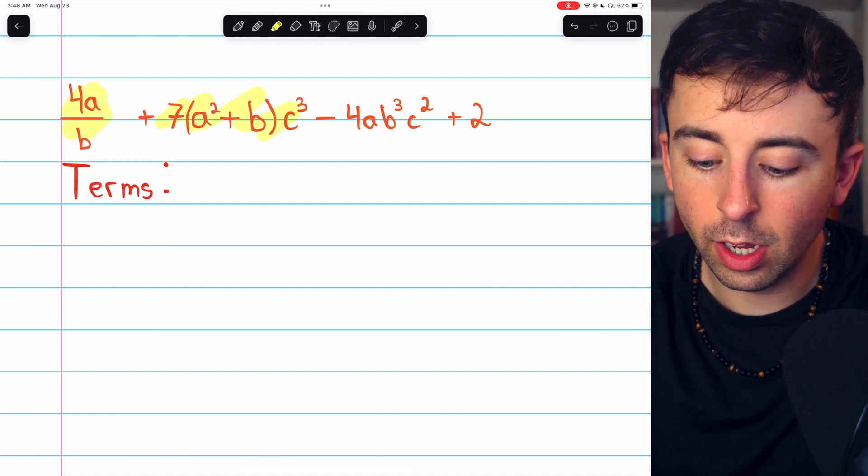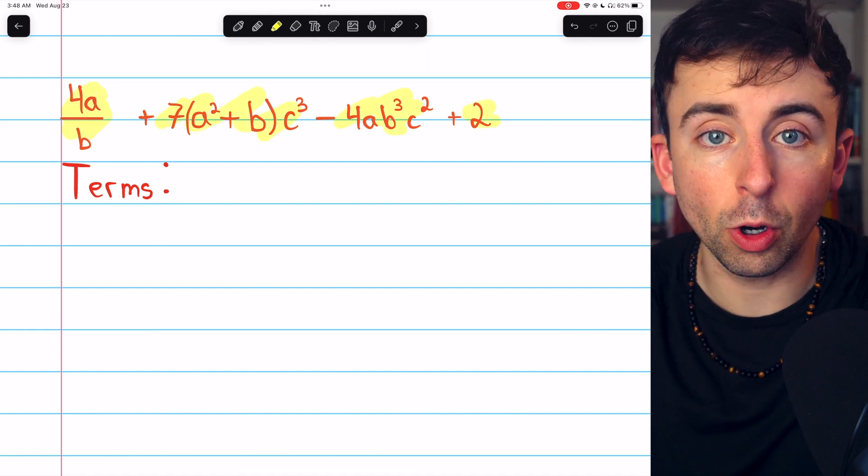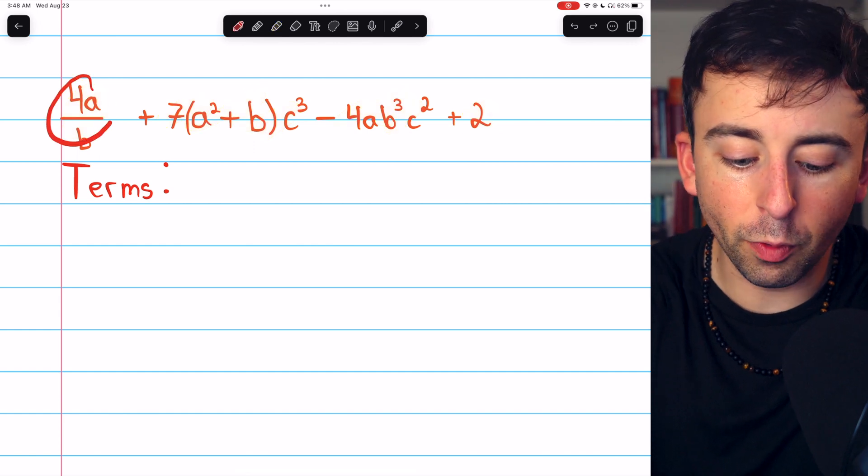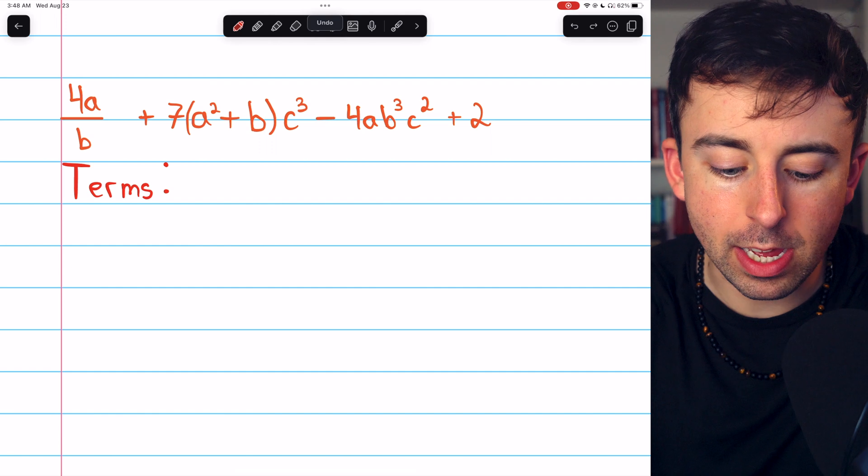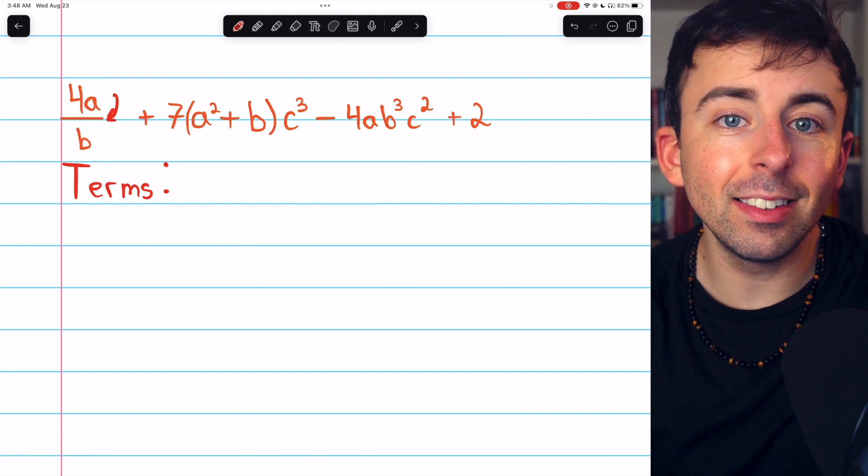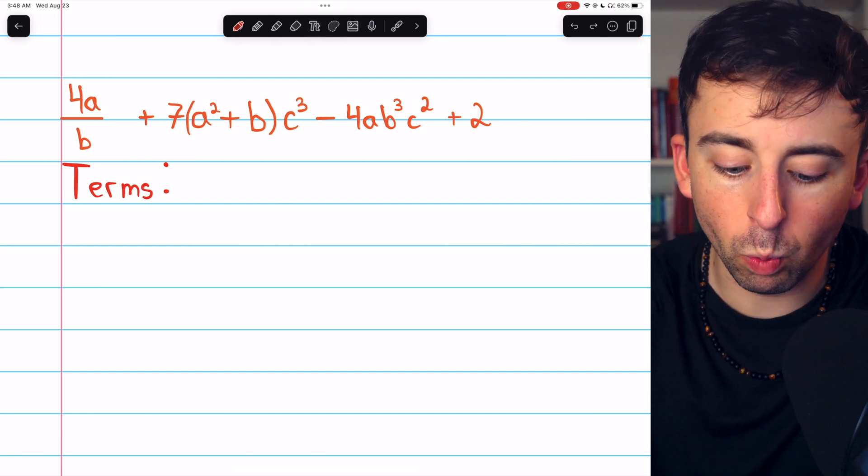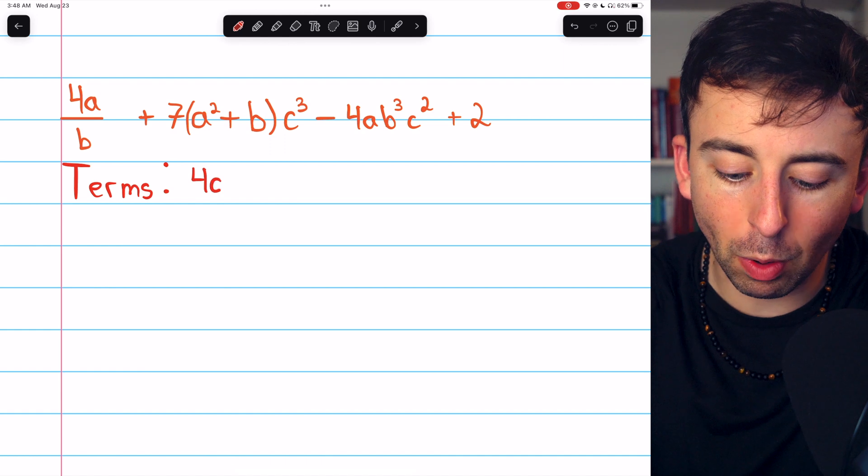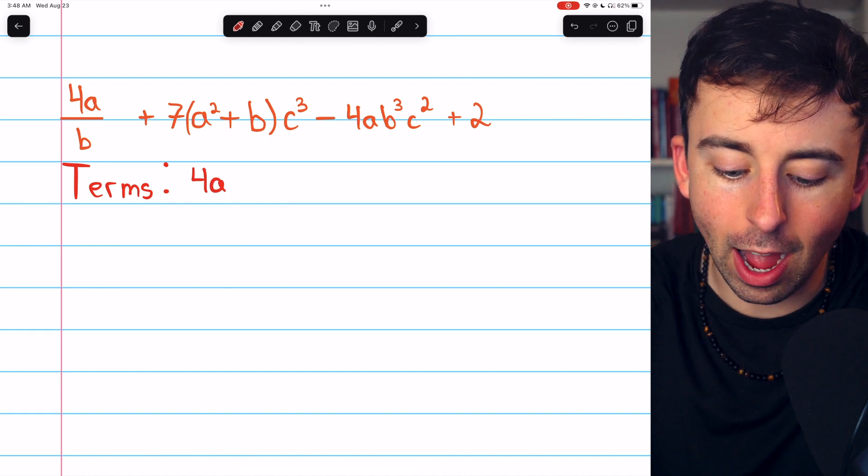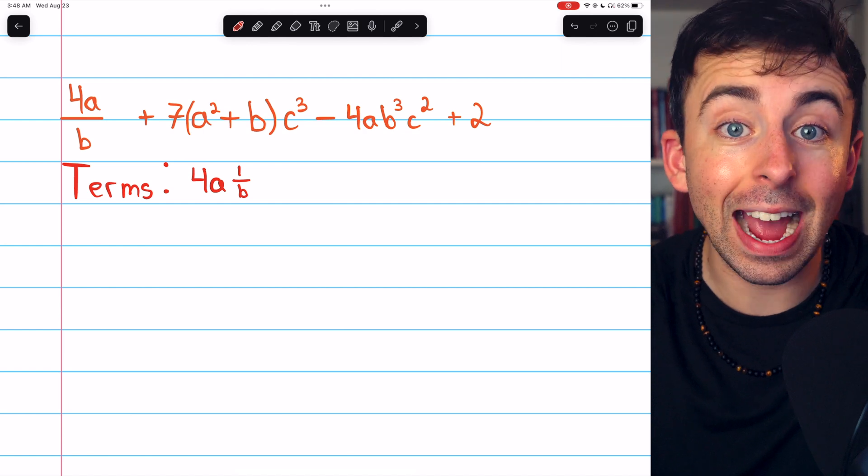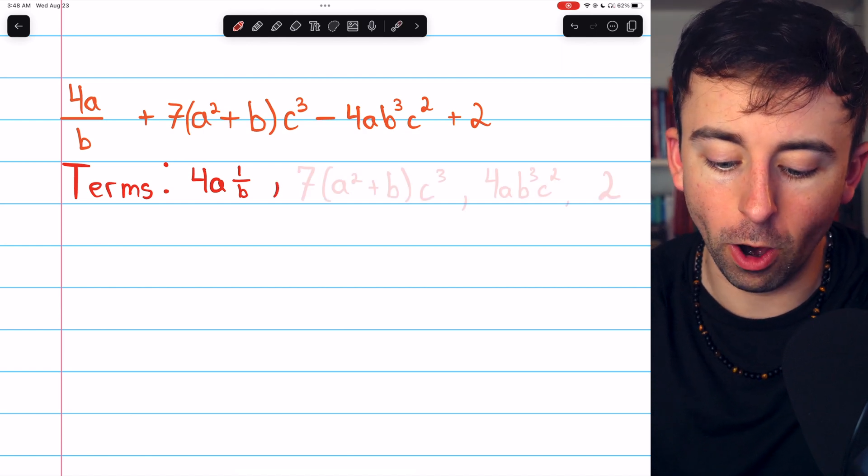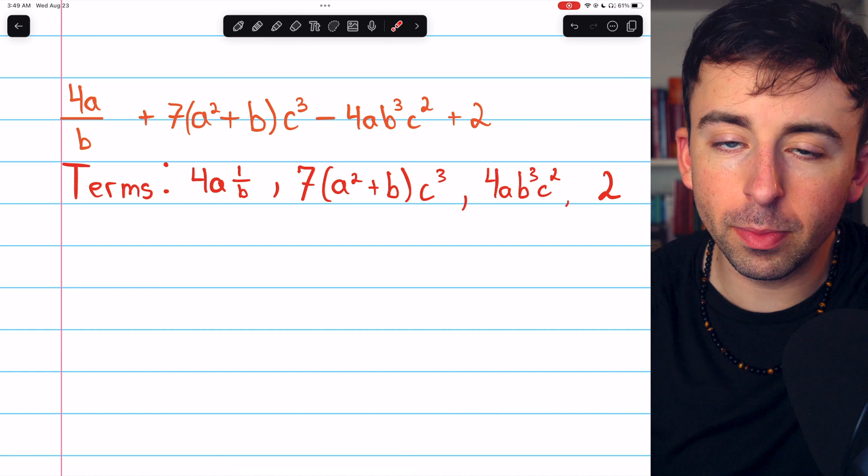So in this case, there are 1, 2, 3, 4 terms. The first term is 4a over b. Now dividing by b, which is what's happening here, is the same as multiplying by 1 over b. So let's write it as 4a times 1 over b. That makes it easier to see what the factors of this term are. And there are the rest of the terms listed out.